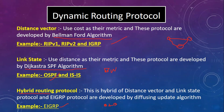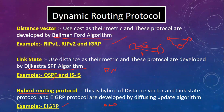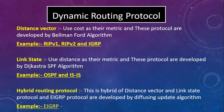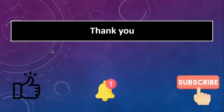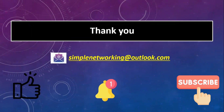EIGRP has an advantage with Successor and Feasible Successor. If a router has two links, the first link is the Successor and the second is the Feasible Successor. EIGRP determines that if the primary link fails, the feasible successor link is automatically used — providing redundancy. Thank you for watching this video. If you have any doubts, please comment. Please like, share, and subscribe, or email us.